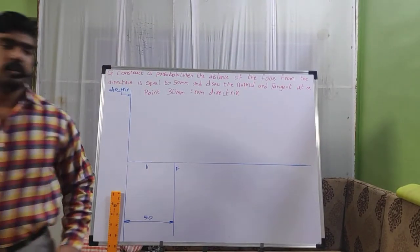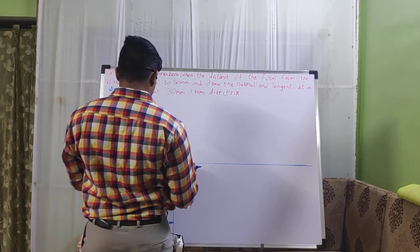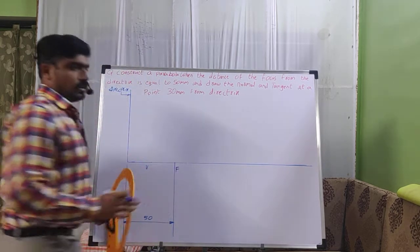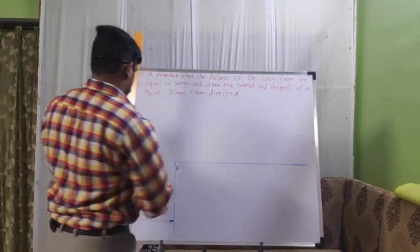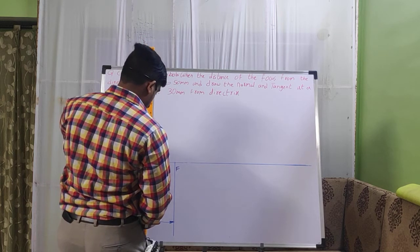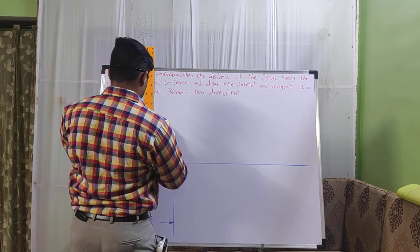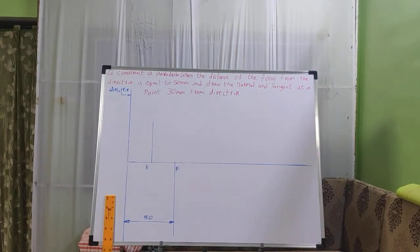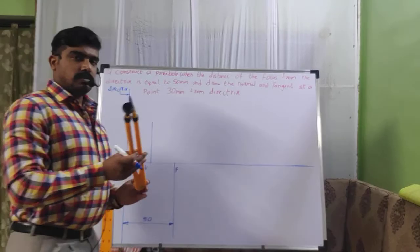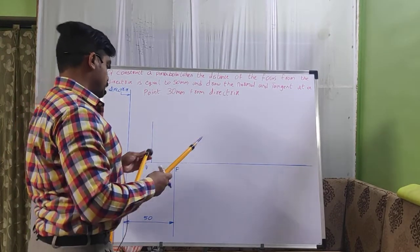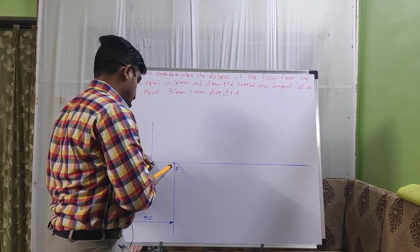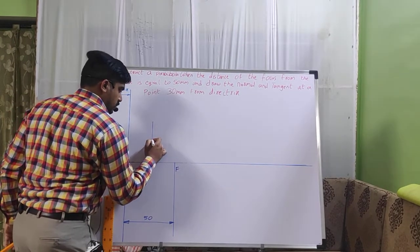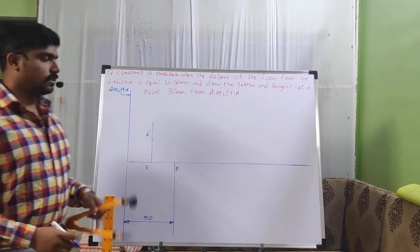Take out the protractor and place it at the point V on the horizontal line, and mark out 90 degrees. Draw this perpendicular line at V. Next, we need to find the point F dash. Take out the compass, fix it tightly, open it to measure the distance between V and F, and cut an arc on the perpendicular line. That gives us the point F dash.